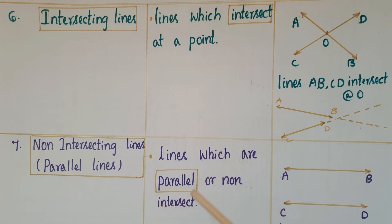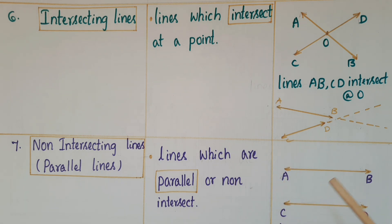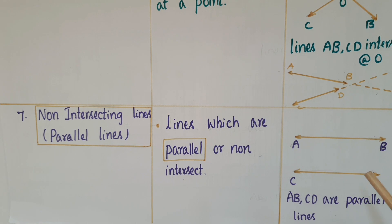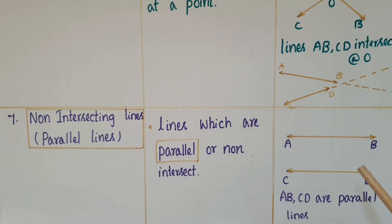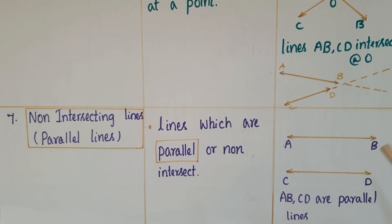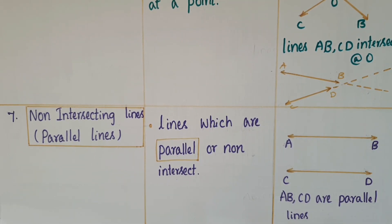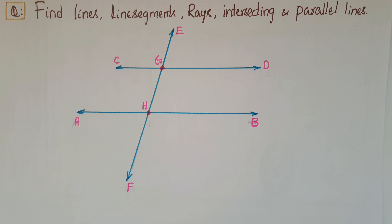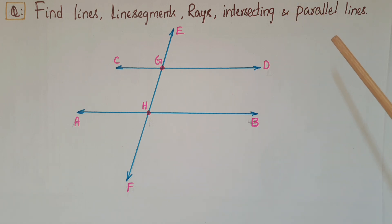Next one is non-intersecting lines or parallel lines. Lines which are parallel or non-intersecting are called parallel lines. Here, AB and CD are called parallel lines or non-intersecting lines. Now, find lines, line segments, rays, intersecting and parallel lines from the given figure.